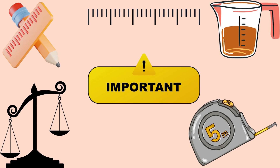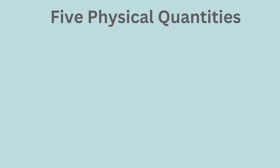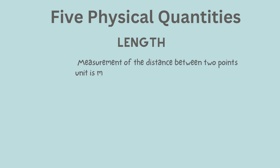Let's discuss five physical quantities which are commonly used in our daily lives. Length: Length is the measurement of the distance between two points. The standard SI unit for length is meters. An instrument used to measure length is a ruler or tape measure.